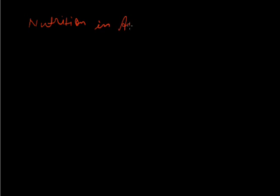Good evening students. Today I'll start the topic: Nutrition in Animals. Most animals depend on plants and other food products like flesh. Animals can get food mainly from plants — they can be herbivorous if they eat plants, or carnivorous if they eat the flesh of other animals. Sometimes animals suck blood from the body, for example leech and female mosquito, and some animals use a parasitic mode of nutrition, sucking liquid from the body of a host.